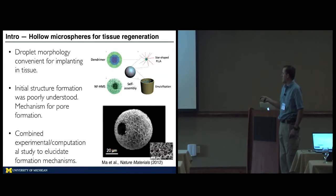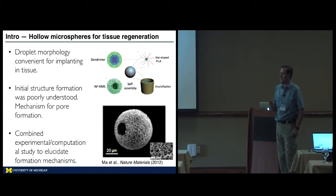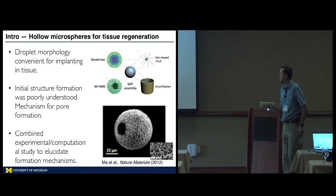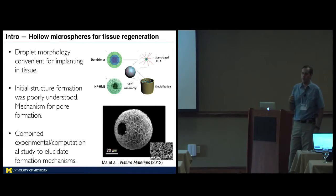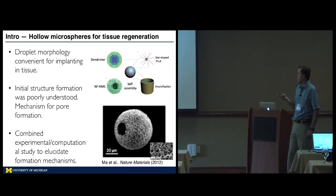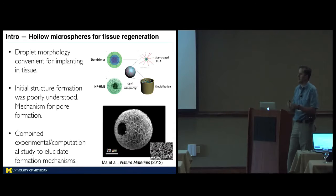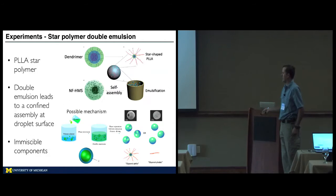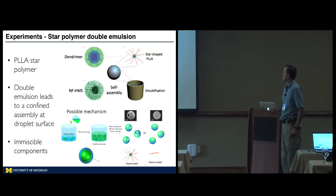They could make these pretty easily and change the parameters, and they really came to us because they didn't understand what to change — the number of arms in the polymer or the length of the arms — in order to get a targeted geometry of the final droplet.